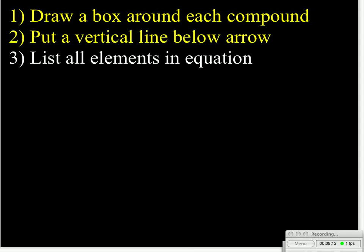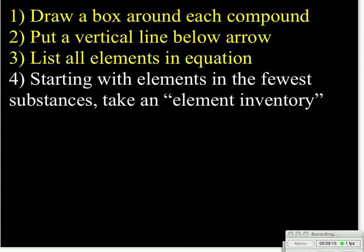The third thing we'll do is we'll list all the elements in the equation. The fourth step is we'll start with elements that show up in the fewest substances, and then we'll take an element inventory, going element by element. And what I mean by starting with elements in the fewest substances is sometimes an element will appear in one compound that's over on the reactant side, and it'll only show up in one compound that's on the product side, and those are the ones we'd like to be able to start with, because sometimes you get elements that show up in every single compound, and you have so many choices of what to do to get it to balance that you can kind of go in circles and spin your wheels there. So it'd be better if we just started with the elements that show up in the fewest substances. It'll make everything else work out.